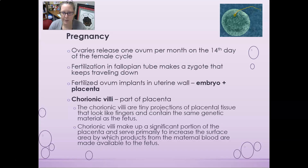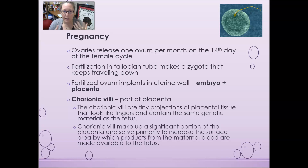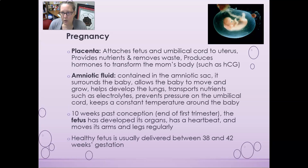Once implanted, it starts creating the placenta. The chorionic villi are part of the placenta — tiny finger-like projections of placental tissue that contain the same genetic material as the fetus. They make up a significant portion of the placenta and serve primarily to increase the surface area by which products of the maternal blood are made available to the fetus, providing nutrients, oxygen, vitamins, and everything it needs to grow.